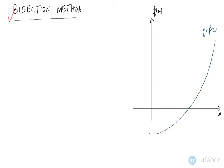We will now understand how the Bisection Method helps us to solve a transcendental equation. For example, you are given an equation y = f(x) = 0, and the graph is shown in the figure.